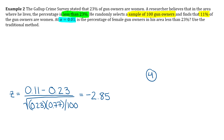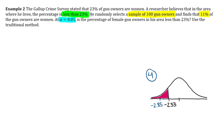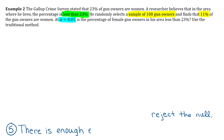Step four: draw the bell curve. Put the critical value of negative 2.33 on it. It's a left-tailed test, so shade to the left — that's the rejection region. The test value of negative 2.85 falls to the left of negative 2.33, so it falls in the rejection region, and we reject the null. Step five: since we're rejecting the null, we support the alternative, and since that's the claim, there is enough evidence to support the claim.